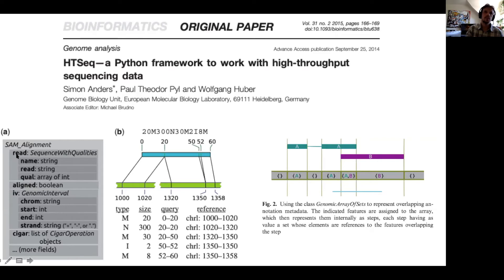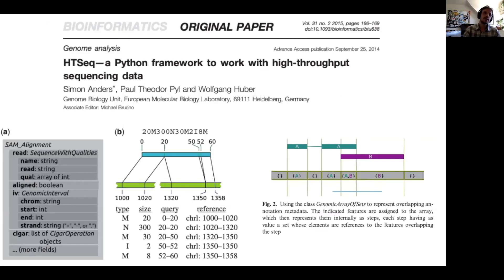In this example, from the paper introducing HTSeq, they showcase one class of objects included in this Python library. We have a SAM alignment class, which is broken down into discrete fields holding their own subsets of information regarding a particular SAM record. SAM stands for Sequence Alignment Map. When you map your reads to a reference database like a reference genome or metagenome using a tool like Bowtie, it generates a SAM file. HTSeq is basically a framework designed to deal with this file type — it processes the information and packages it into discrete pockets that are easily accessible within a Python script.